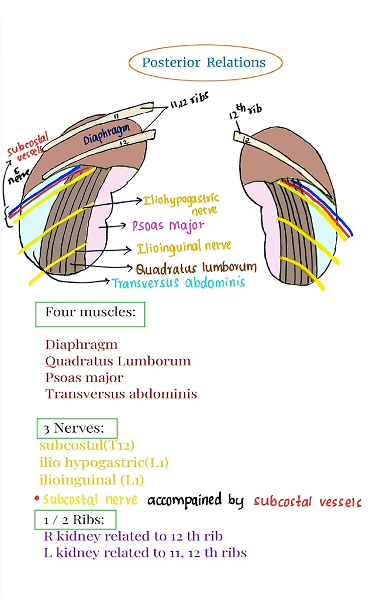Three nerves: subcostal nerve, iliohypogastric, and ilioinguinal nerve.